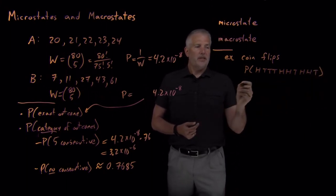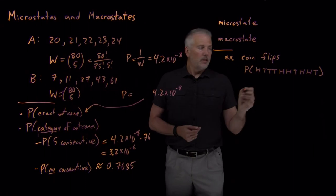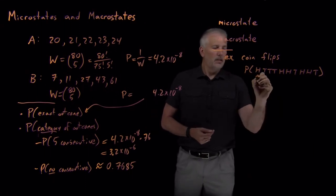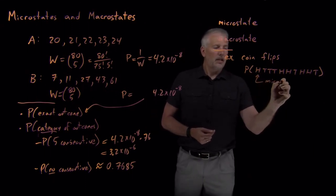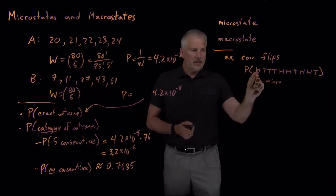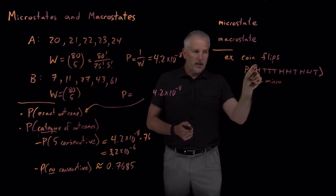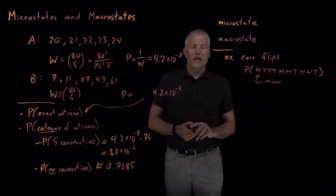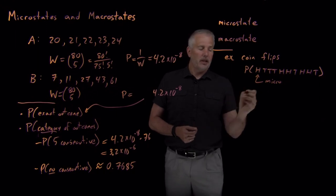If I say what's the probability that I get a particular sequence of heads and tails, then what I've described is a microstate. I can calculate the probability of this exact combination of heads and tails microscopically describing what the outcome of every individual event was.